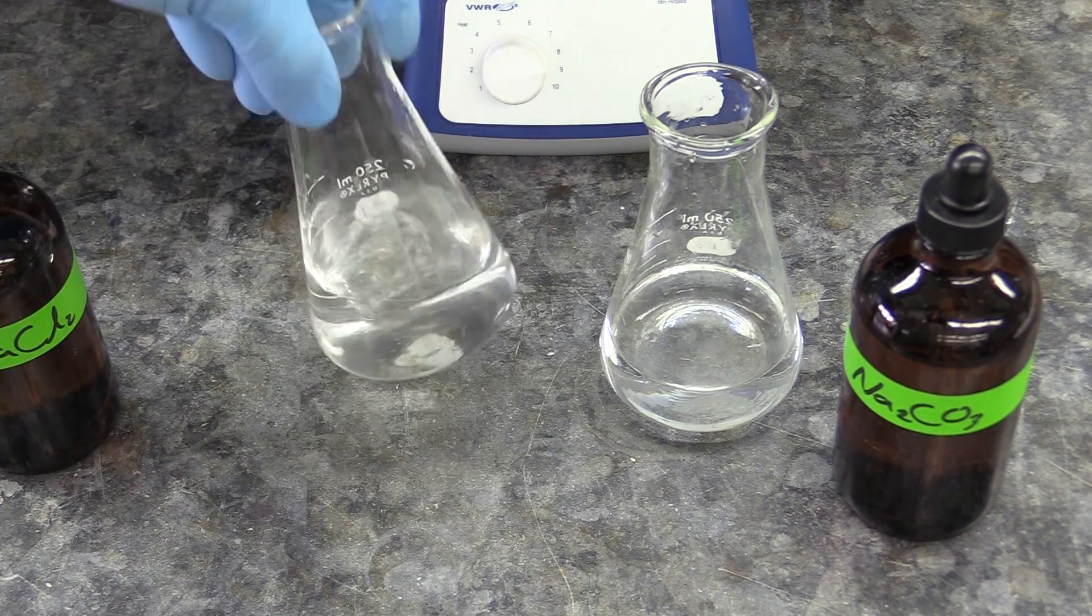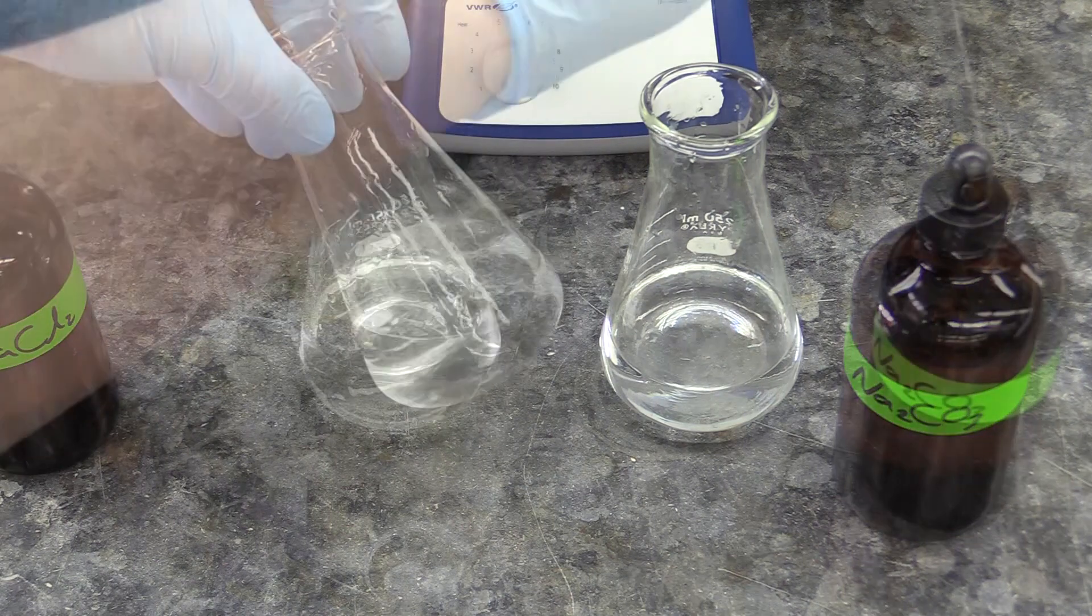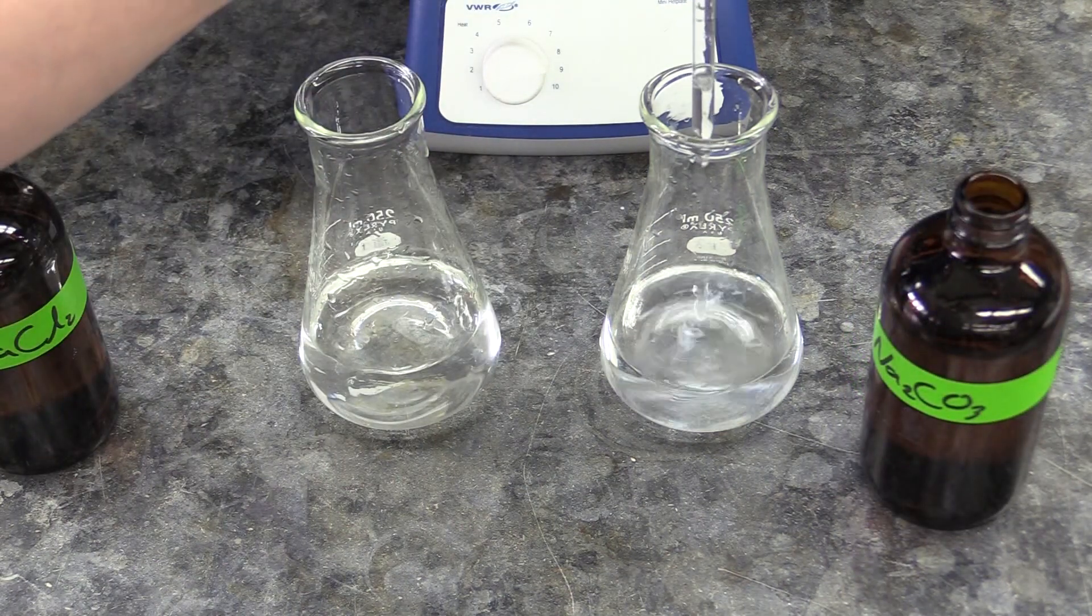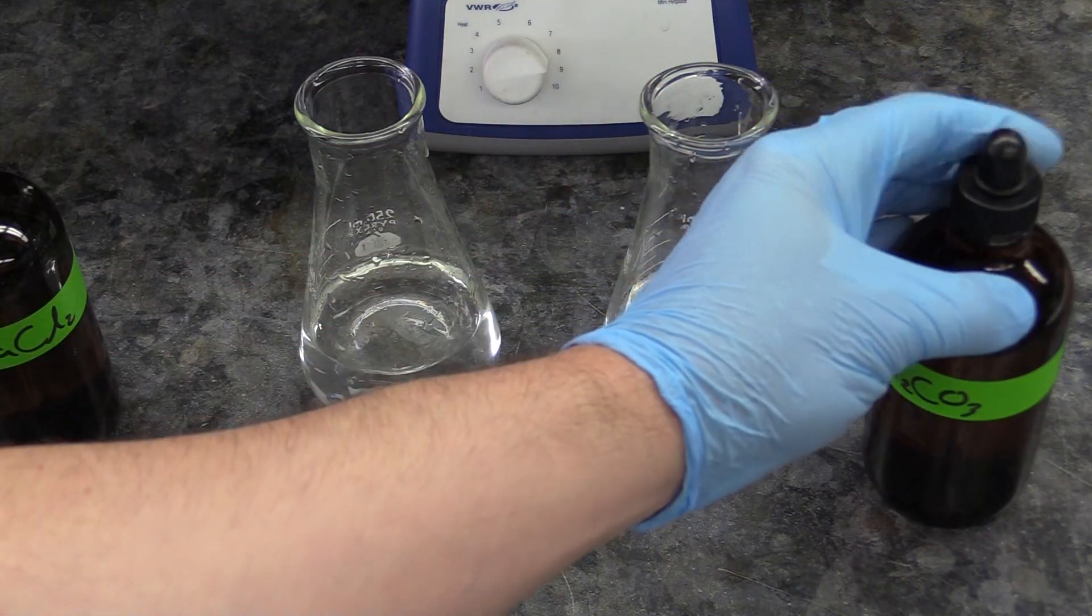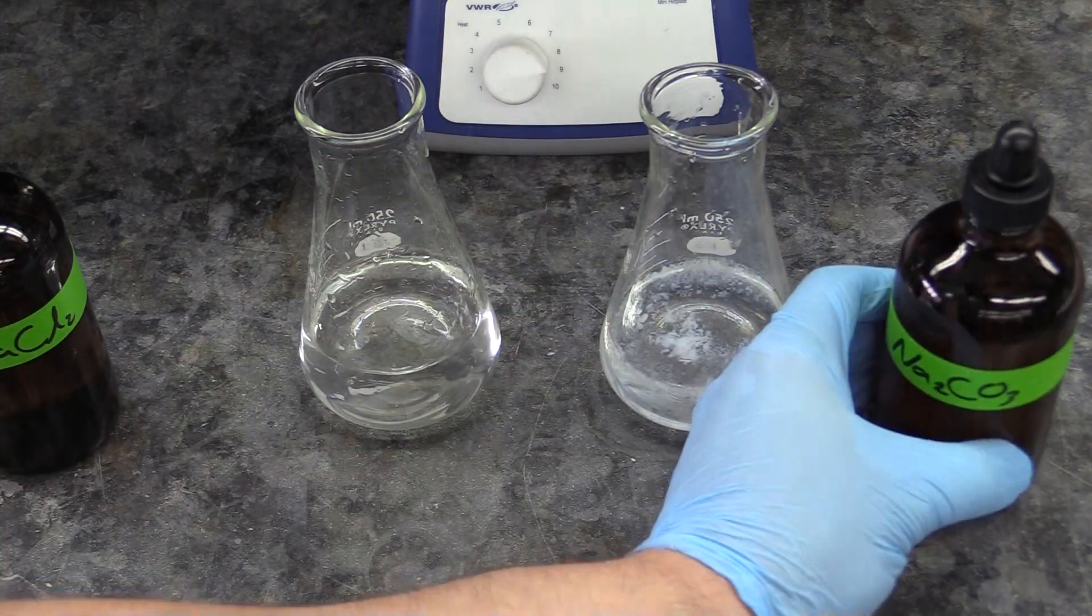Give each flask a swirl to mix them and let them rest for a couple minutes. A precipitate should form in one of your flasks and if you interpret what this information tells you right, you'll know which of the two salts in your mixture was in excess.